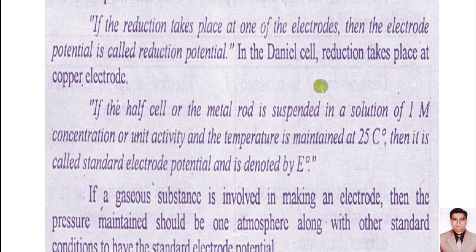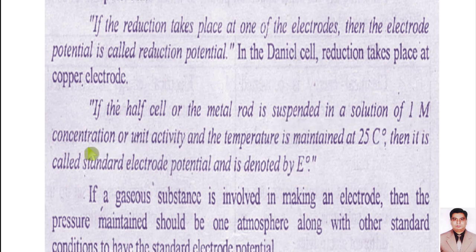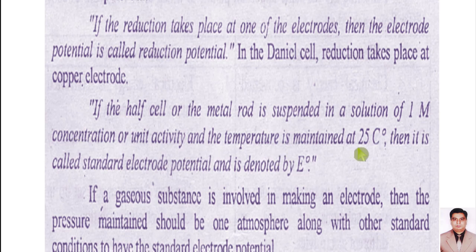Dear students, now we will understand another term — standard electrode potential. We can say that the standard electrode potential means: if the half cell or the metal rod is suspended in a solution of one molar concentration or unit activity, and the temperature is maintained at 25 degrees Celsius, then we say it is standard electrode potential and we represent it as E⁰. Standard state means concentration of the solution should be 1 molar and temperature should be 25 degrees Celsius. Then we write standard electrode potential with the symbol E⁰.